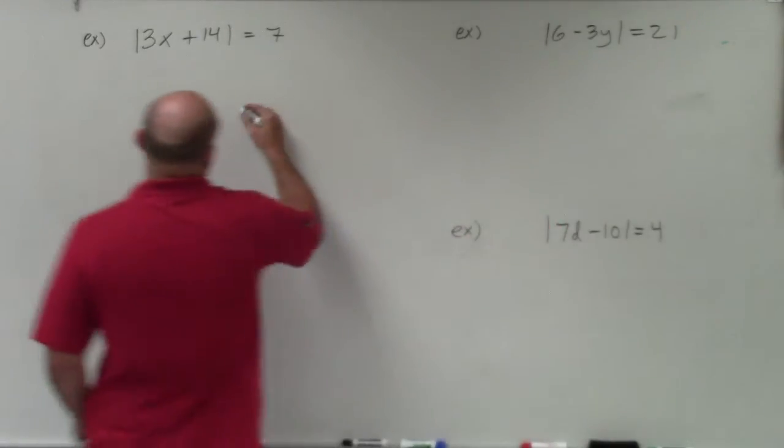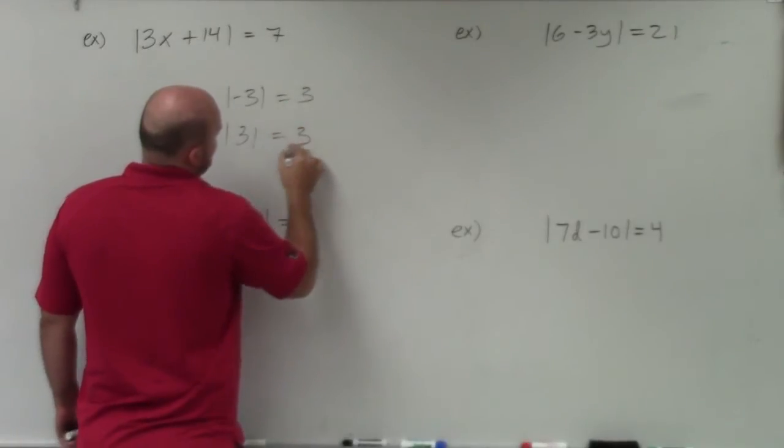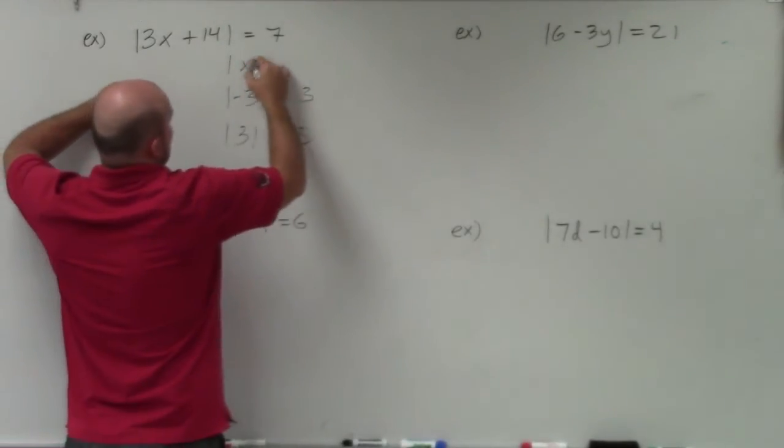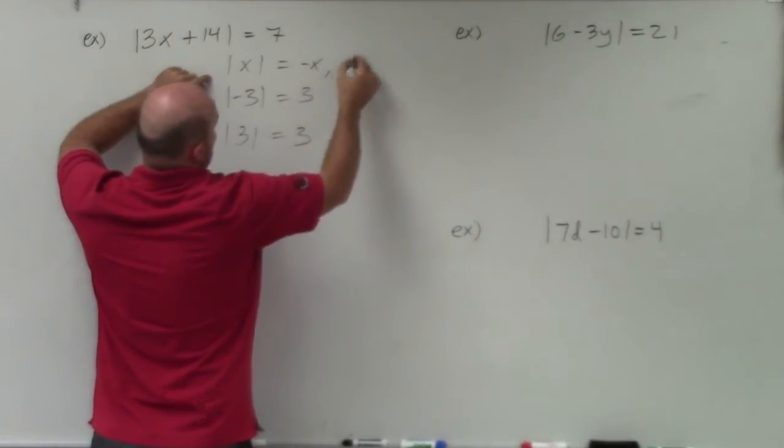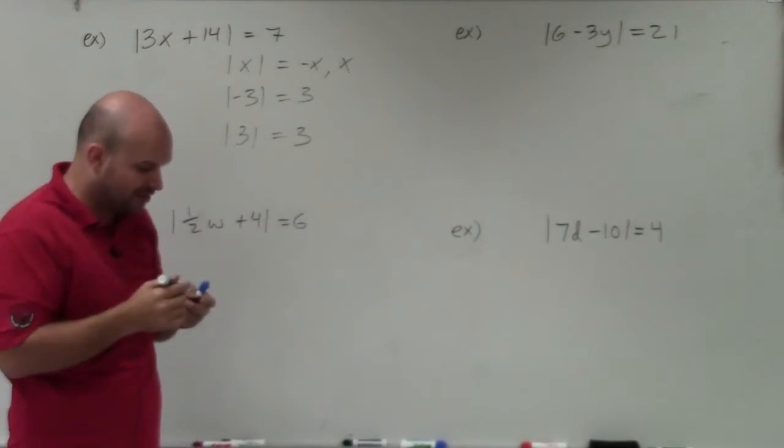Because remember, absolute value of a number, like absolute value of negative 3 and absolute value of 3, both have the same solution. They're both 3. So when we're solving, if I say the absolute value of x, we want to know what is the negative x as well as the positive x. There are two solutions we're going to be looking for.